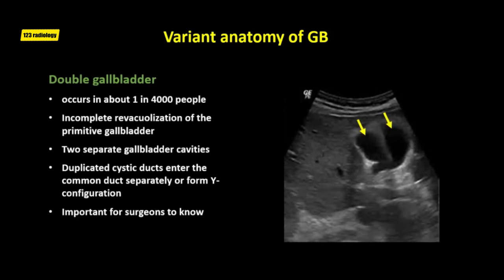Gallbladder duplication is a rare congenital anomaly occurring in about one in four thousand people. It is caused by incomplete revacualization of the primitive gallbladder, resulting in a persistent longitudinal septum that divides the gallbladder longitudinally into two separate cavities, each with its own cystic duct. These duplicated cystic ducts may enter the common duct separately or form a Y-configuration. Most reported cases involve cholecystitis with gallstones, and surgeons should be aware of associated anatomical variations of the cystic duct and hepatic artery.